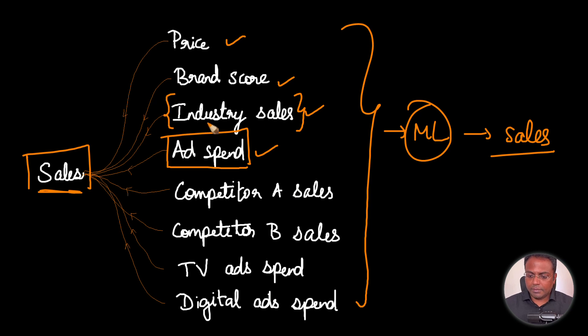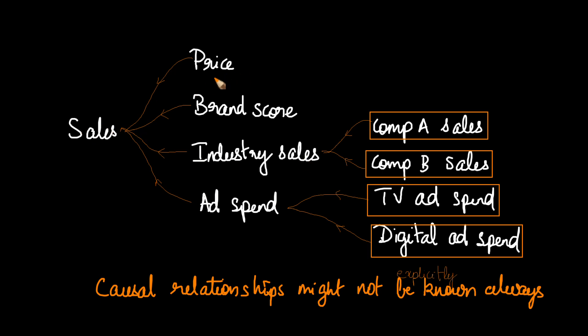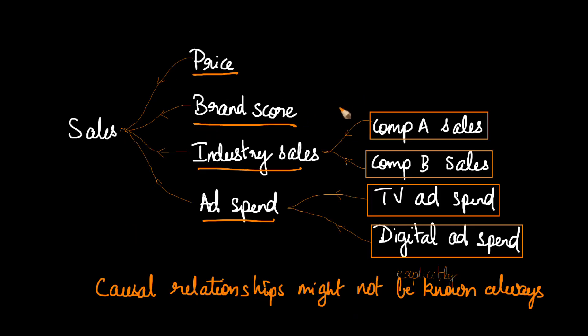It is very important that you select the features that are absolutely and correctly relevant to explain the sales. For example, the industry sales is actually a function of competitor A sales and B sales. Likewise, the ad spend is a function of the TV ad spend, digital ad spend, and many other ad spend. These causal relationships might not be known beforehand, and this is where MRMR tries to come in and help us solve this problem.